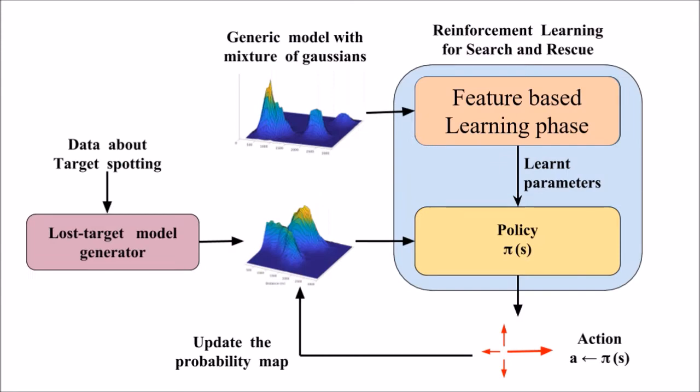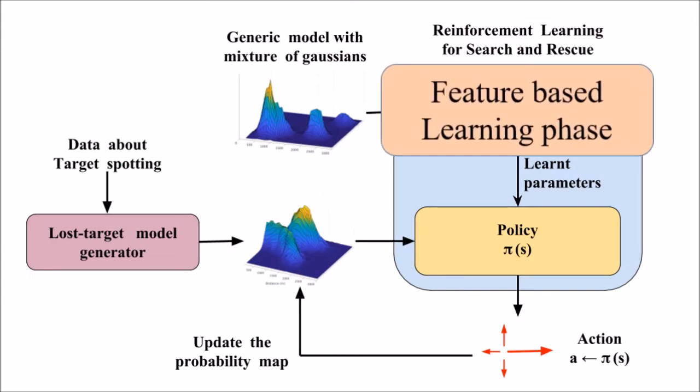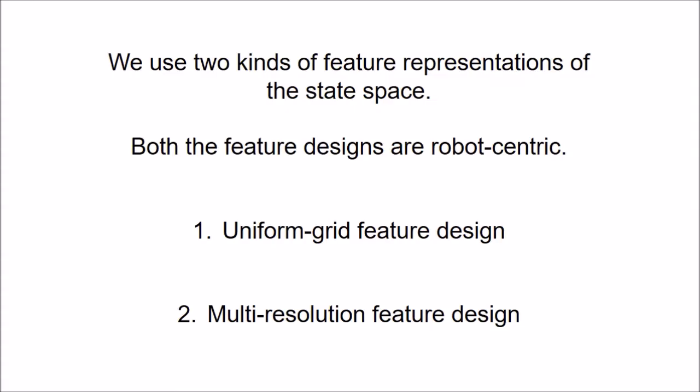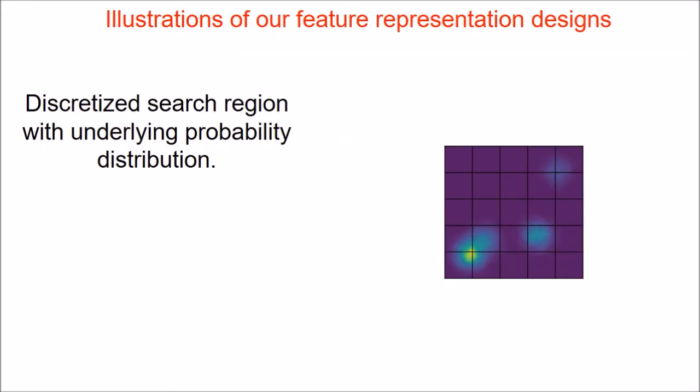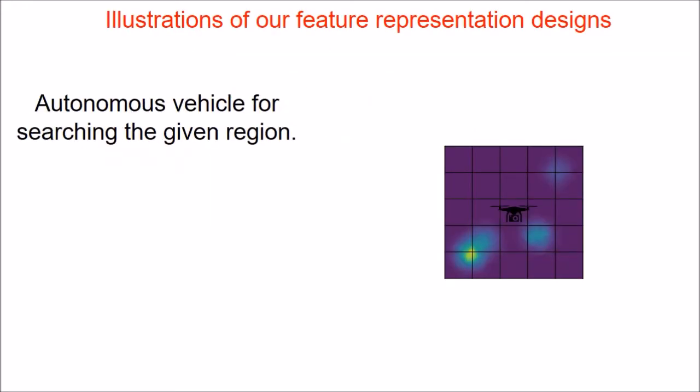During the learning phase, we introduce two kinds of feature aggregations. Both the feature designs are robot-centric. Here we illustrate both the feature representations used in our approach.